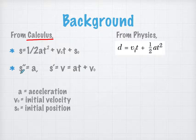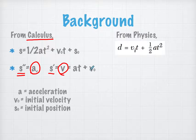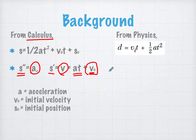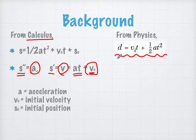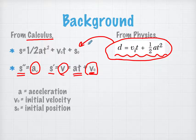Velocity can be expressed as acceleration times time plus the initial value. In the physics reference sheet, there is no mention of initial position, but we can see that the idea presented in physics is about the same as the idea we discuss in calculus class. Now let's try to look at some examples of projectile motion.